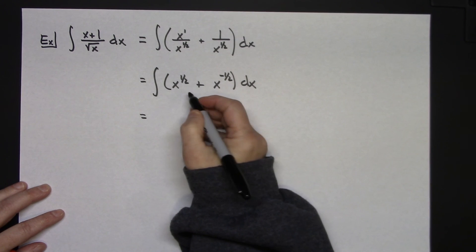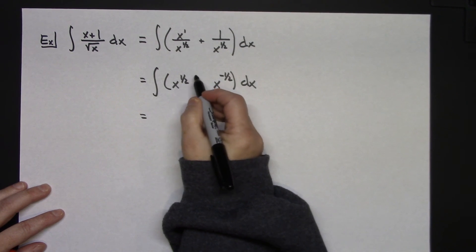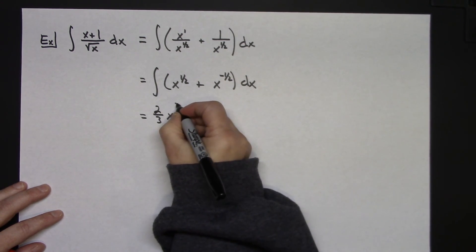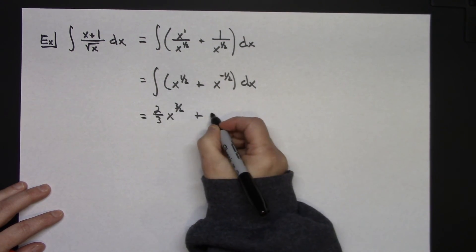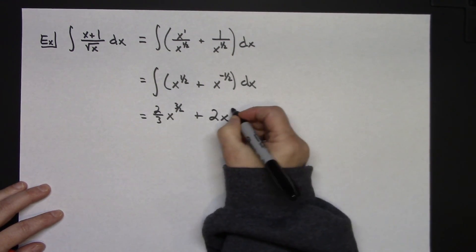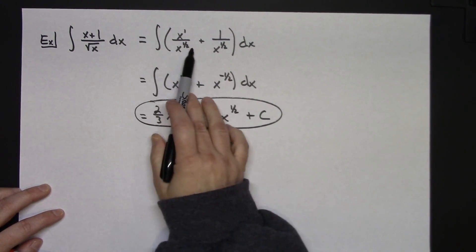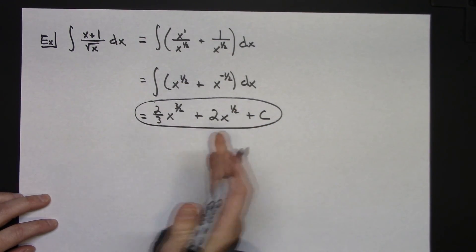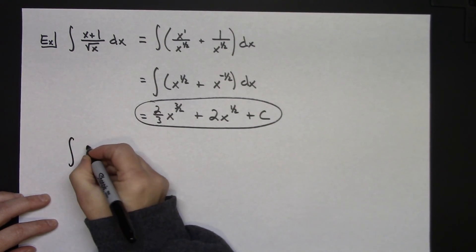Integrating x^{1/2}: add 1 by adding 2/2, giving exponent 3/2, so the coefficient flips to 2/3 — giving (2/3)x^{3/2}. Integrating x^{-1/2}: add 1 (i.e., add 2/2) giving exponent 1/2, so 1 over (1/2) gives coefficient 2 — giving 2x^{1/2}. The full answer is (2/3)x^{3/2} + 2x^{1/2} + C.